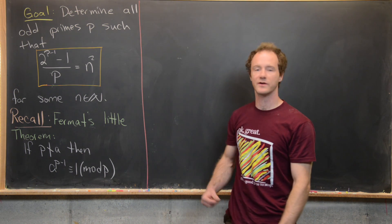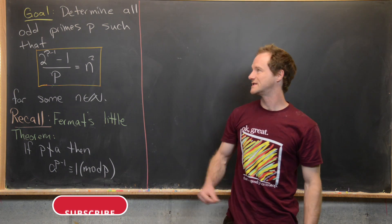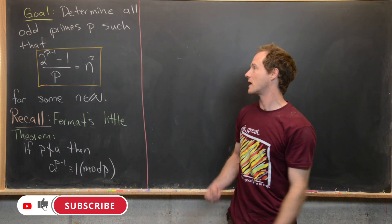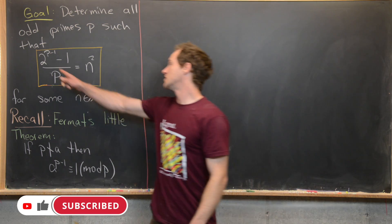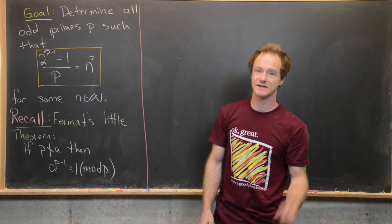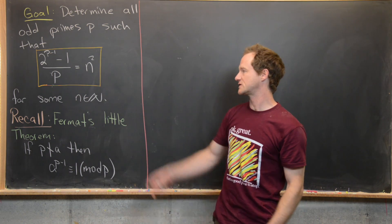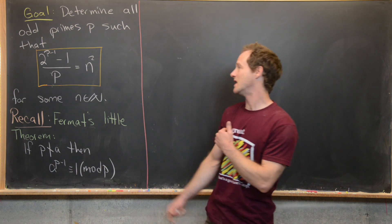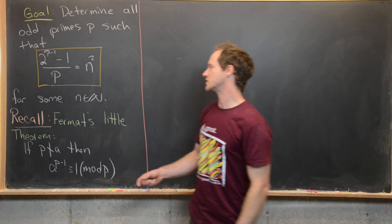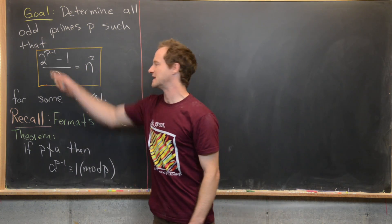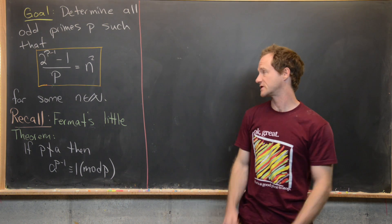Here we're going to look at a nice little number theory problem. Our goal is to determine all of the odd primes p such that (2^(p-1) - 1) / p = n² for some natural number n. Essentially, we want to determine everything that makes this left-hand side a perfect square.